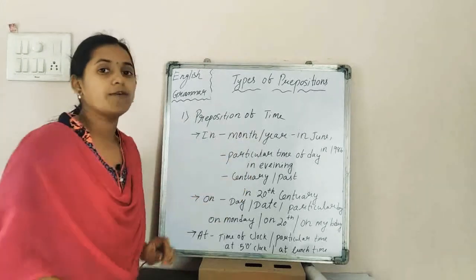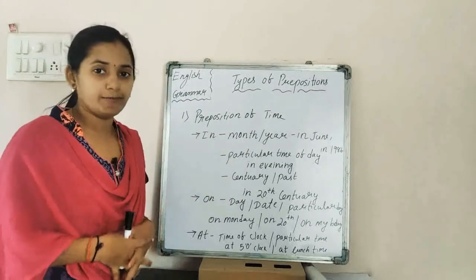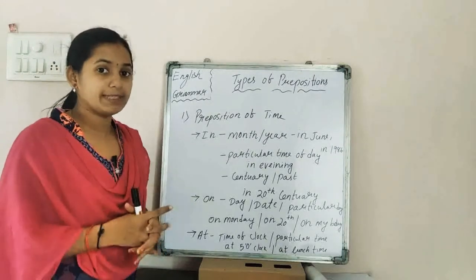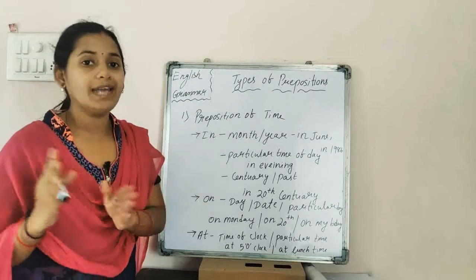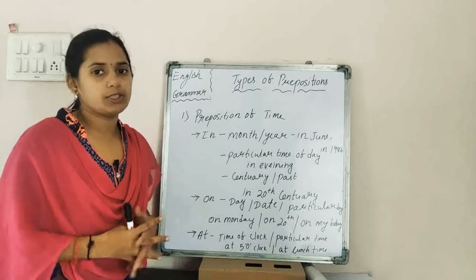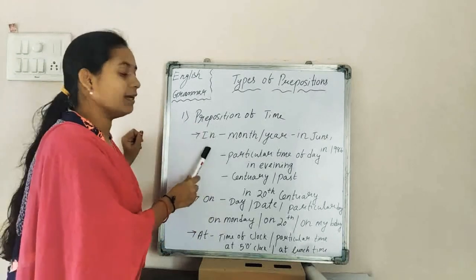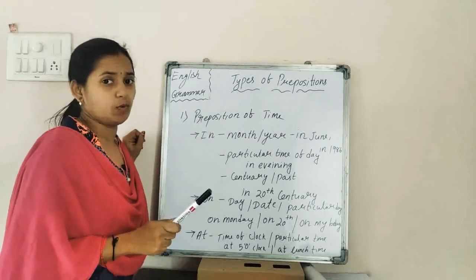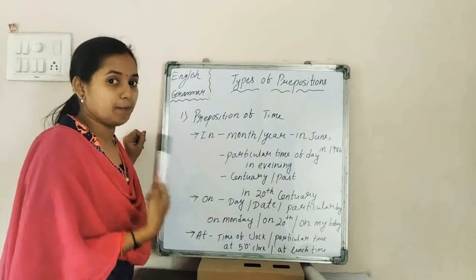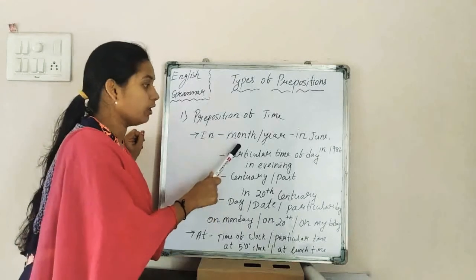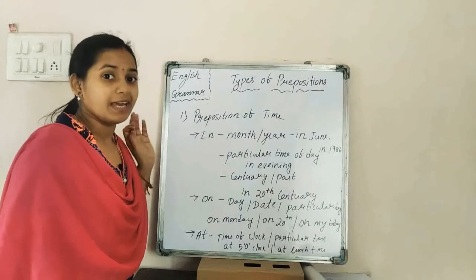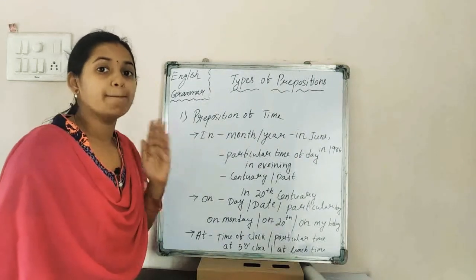The first type is preposition of time. It gives information about the time. The basic time prepositions are: in, on, and at. The first one is 'in.' In is used before a month or a year — for example, in June, in February, in 1985.